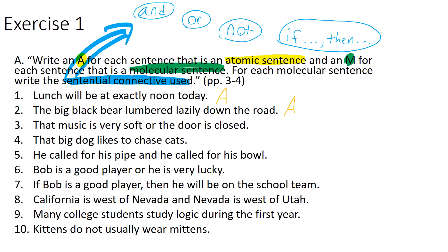Looking at number three: 'That music is very soft OR the door is closed.' Obviously the OR is a giveaway — it's a sentential connective, also called a disjunction. So we have a molecular sentence, with two atomic sentences embedded within it: 'that music is very soft' and 'the door is closed.' Number five: 'He called for his pipe AND he called for his bowl.' We have the AND sentential connective, so it's a molecular sentence, with two embedded atomic sentences: 'he called for his pipe' and 'he called for his bowl.'